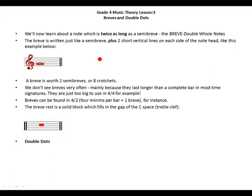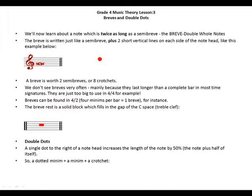A single dot to the right of a note increases the length of the note by 50%, the note plus half of its value. So a dotted minim equals a minim and a crotchet.